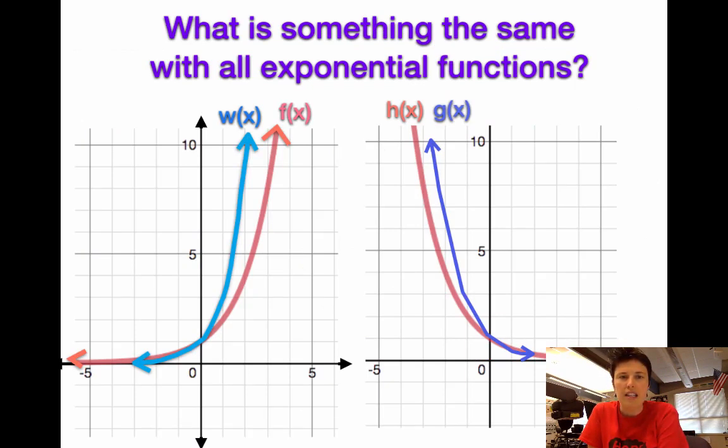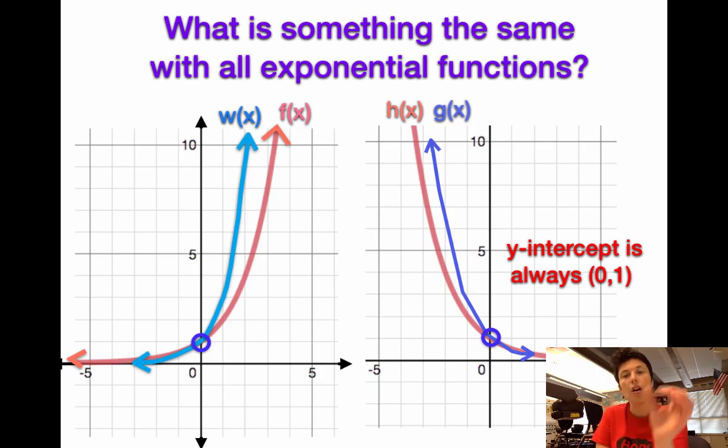So looking back at this, it says, what is something the same with all exponential functions? What is something that all the graphs have in common? And hopefully you're kind of noticing that they all have the same y-intercept. They're all going through 0, 1. And that is a really key feature of exponential graphs.